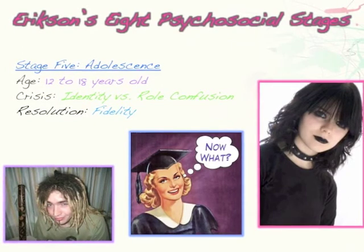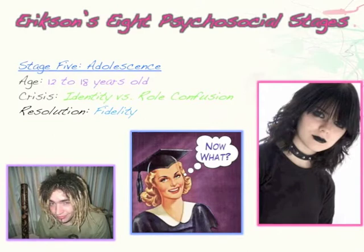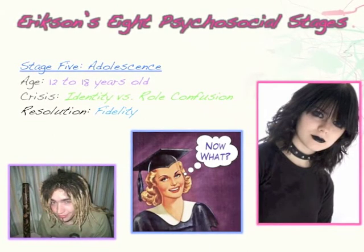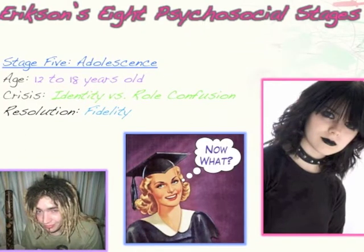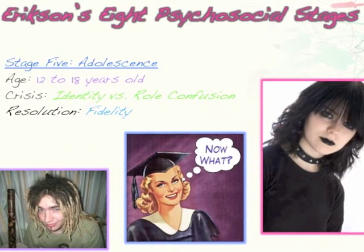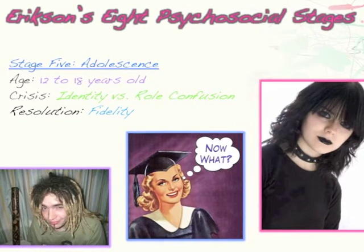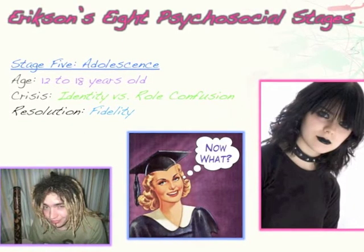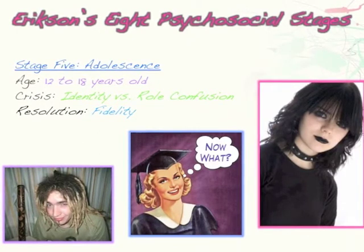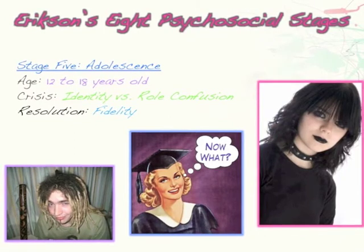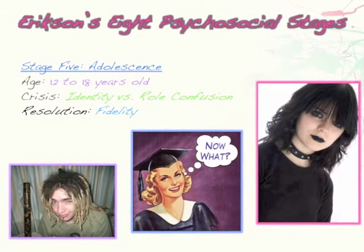Erikson also suggested that during adolescence, teens engage in what he called a psychological moratorium — a period after high school and before college to reflect on what you want to do. This is practiced in other countries but not typically in America, where we generally go straight from high school into college and pick a major. Erikson thought that could be problematic — what if at 18 you choose nursing, but by 25 you realize it's not for you? He suggested taking a year to travel, try different occupations and hobbies, discover yourself, and then pursue a path.